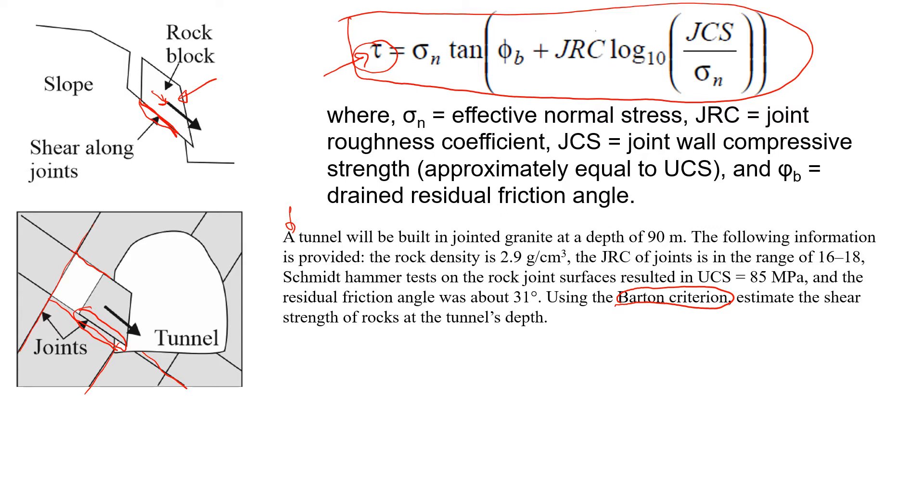How do we know that it's jointed rock mass? You will see that we have a few things. Here is a joint roughness coefficient JRC. I have a video that explains how we can measure JRC for different rock surfaces. Please watch that one, you will see the link in the description.